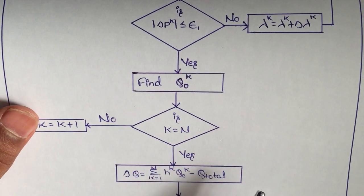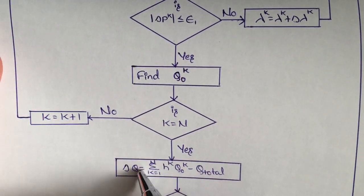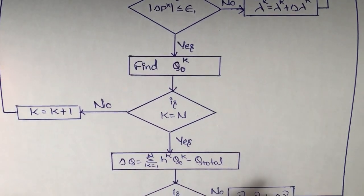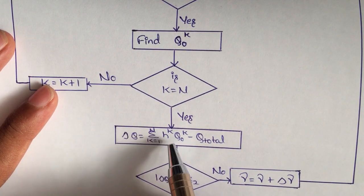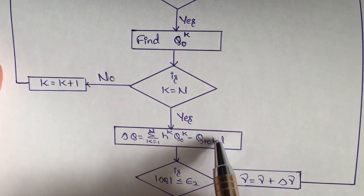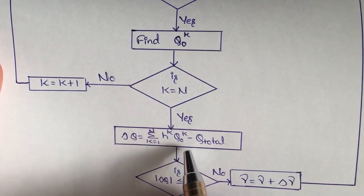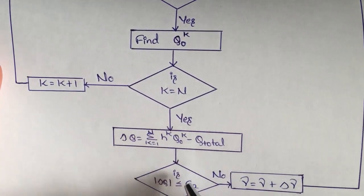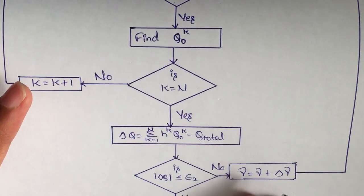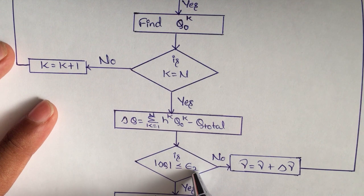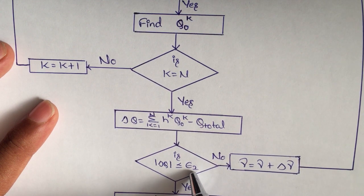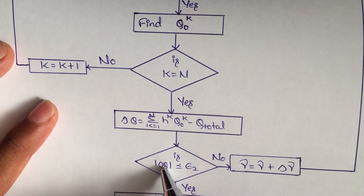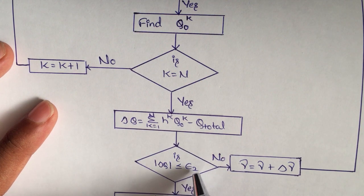If k has reached N, we calculate delta q — the change in water discharge — as the summation from k=1 to N of h(k) times q naught(k), minus q total. We then check whether delta q is less than epsilon 2, which is the tolerance value for water discharge.